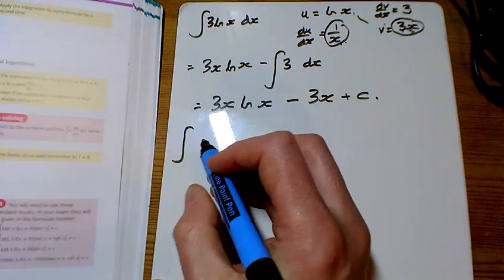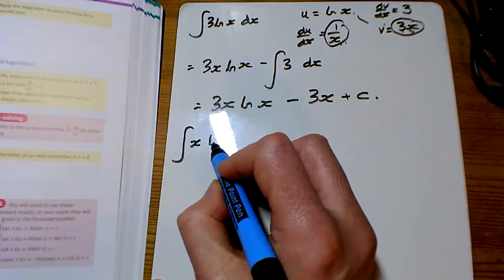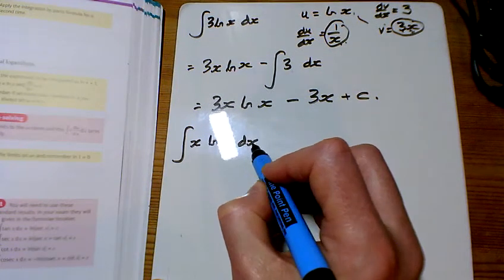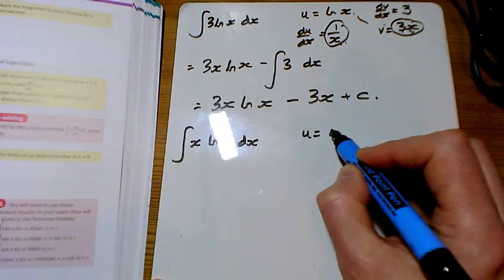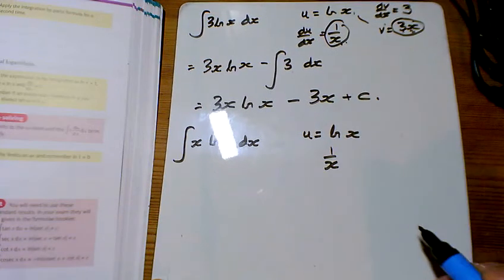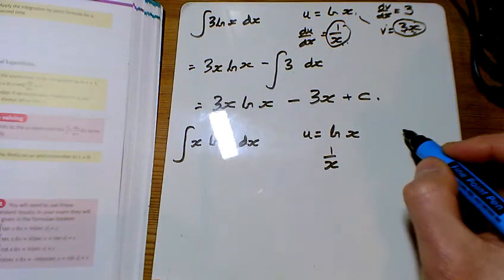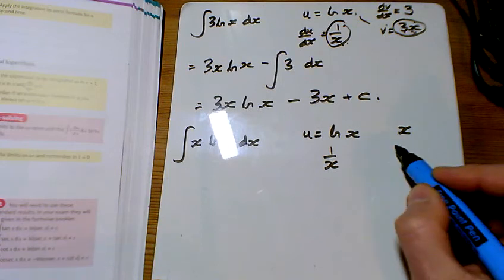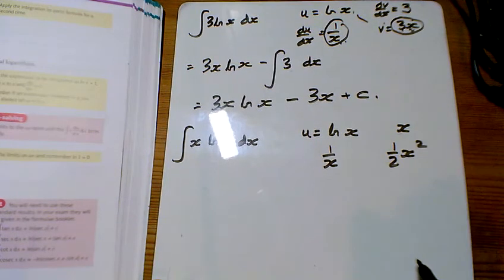So, I'll do B as well. So, for B, we're doing x ln x dx. Same thing, u is equal to ln x, which differentiates to give 1 over x. The other part is x, which integrates to give 1 half x squared.